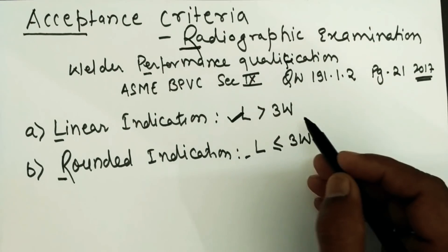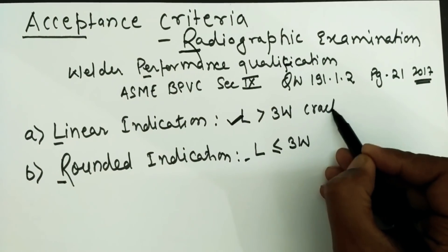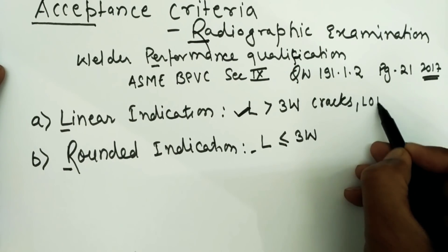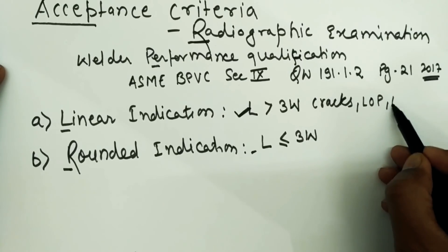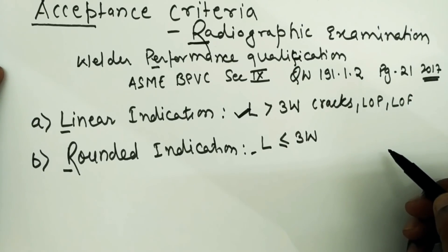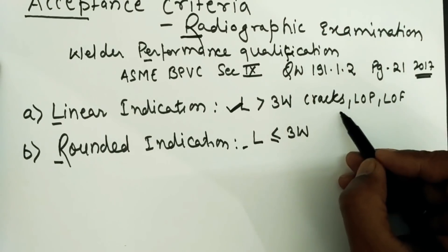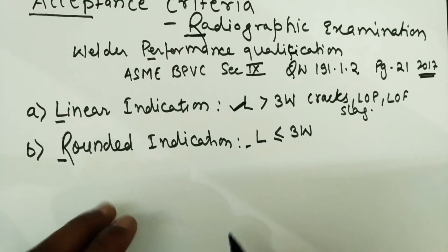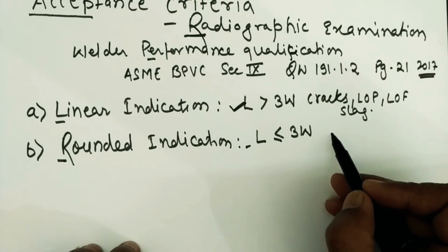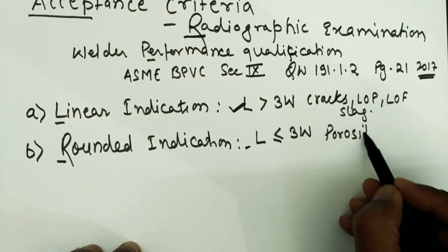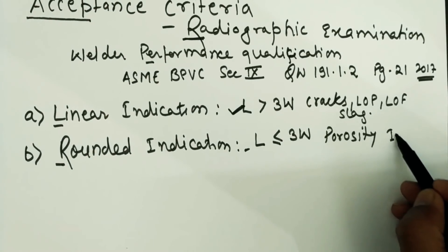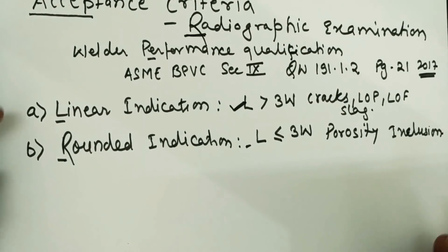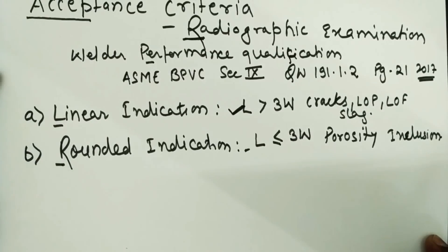In linear indication, we mostly find cracks, lack of penetration or incomplete penetration, lack of fusion or incomplete fusion, and slags. In rounded indication, we find porosity or inclusions — inclusions in the form of slag inclusion or tungsten inclusion. These are the two terminologies used in ASME Section 9.